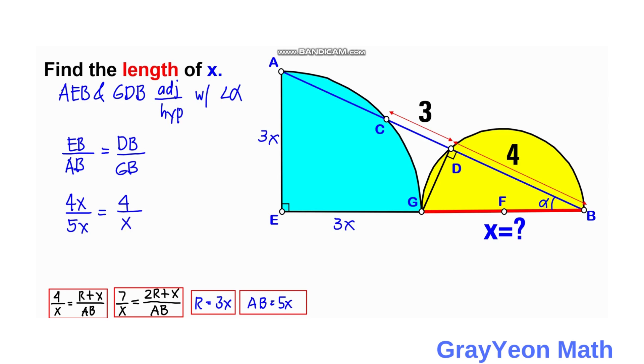We can cancel this 4 on the numerators of the left-hand side and the right-hand side, and this X on the left-hand side numerator and denominator. If you cross-multiply, you will have X is equal to 5 units. And that is our answer for the value of X.